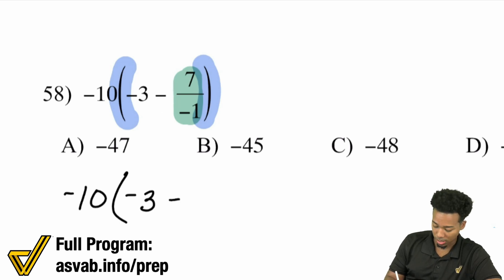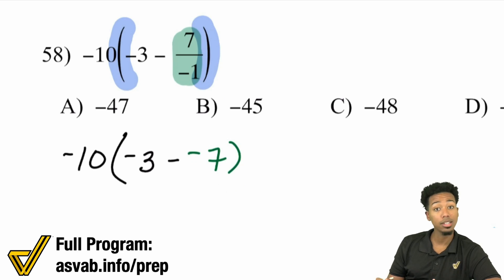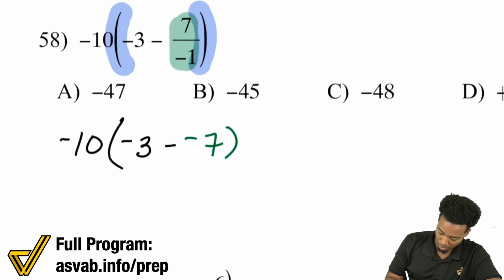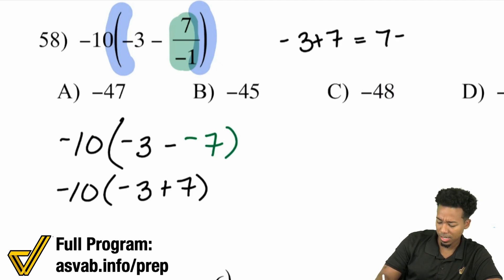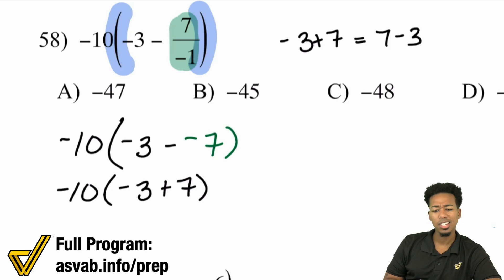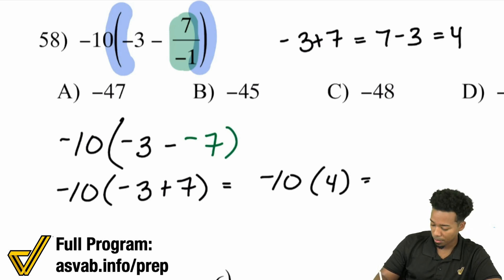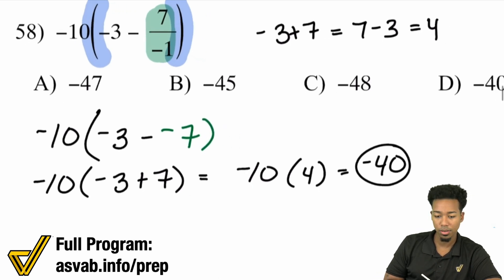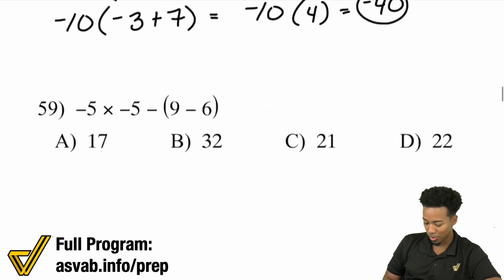7 divided by negative 1 is negative 7. Recall that if you're subtracting a negative, that's the same thing as adding a positive. So this ends up becoming negative 10 times negative 3 plus 7. Negative 3 plus 7 is the same as 7 minus 3, which is 4. So this becomes negative 10 times positive 4 — that gives you negative 40, and the answer is D.